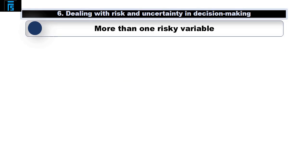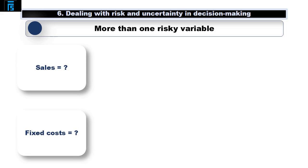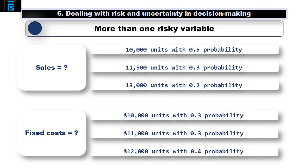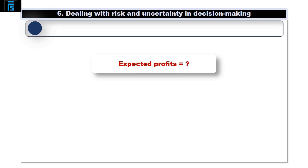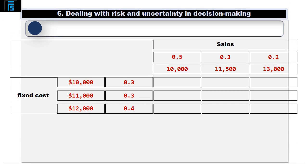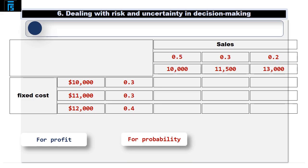Sometimes we may face more than one risky variable. For example, suppose we are unsure about both sales and fixed costs. We think sales might occur with probabilities of 0.5, 0.3, and 0.2 respectively. We also believe fixed costs could be $10,000, $11,000, or $12,000 with probabilities of 0.3, 0.3, and 0.4 respectively. Suppose we wanted to calculate, as a risk neutral decision maker, what expected profits are if contribution per unit is $4. We'll use three tables: one for profit, one for probability, and a final table for profit multiplied by probability.